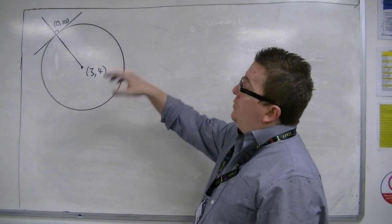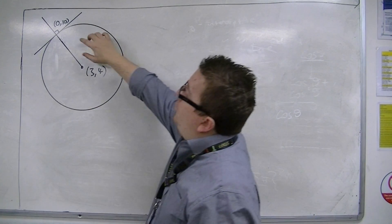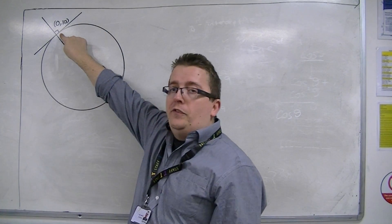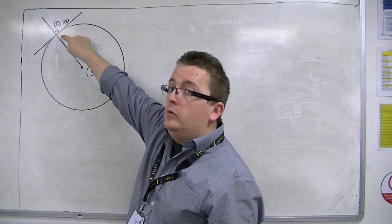We have a circle where we have a center (3, 4), and we've also got a coordinate on the edge of the circle, (0, 10). And we want to find the equation of the tangent and the normal at this point.